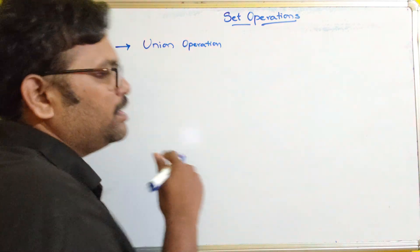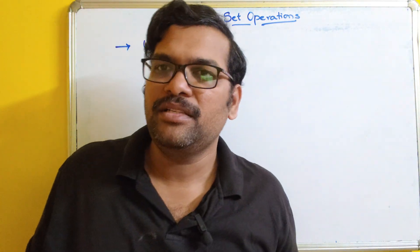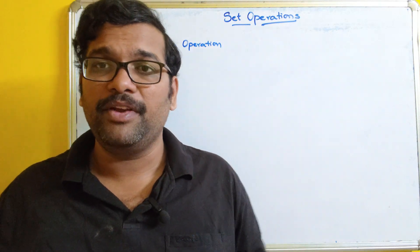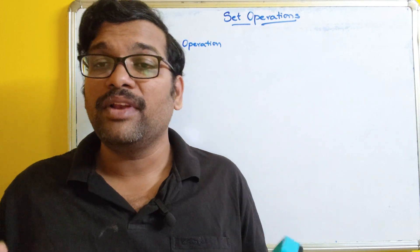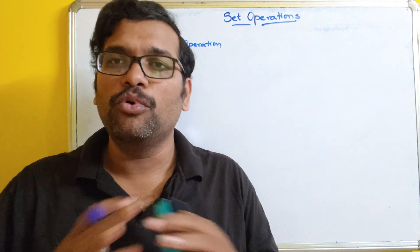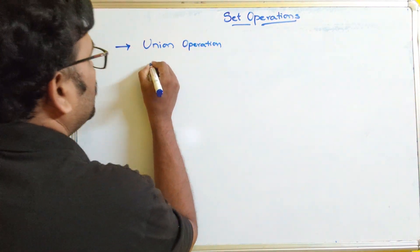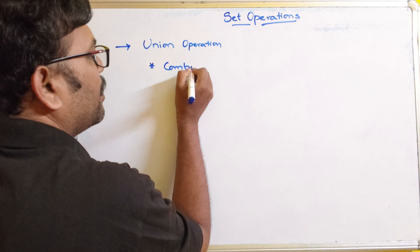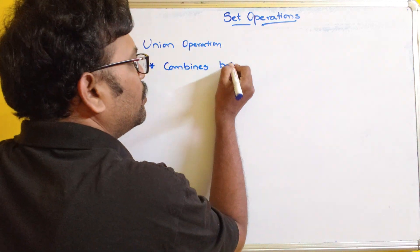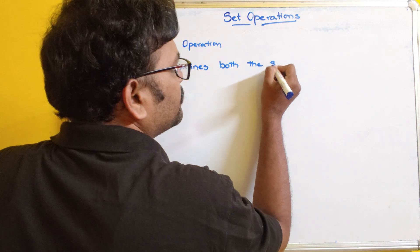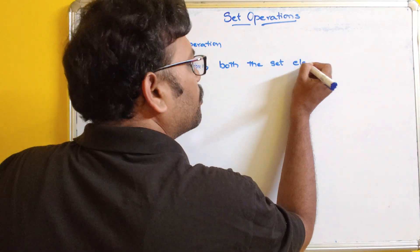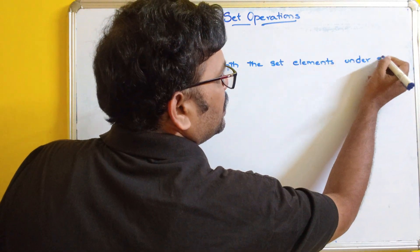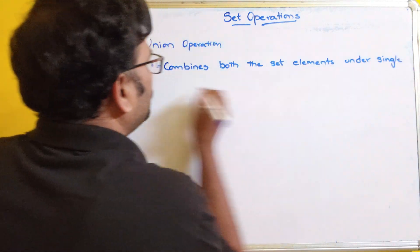Now coming to union — what does union mean? It means the combination of both sets. This union operation is performed between two different sets so that it combines all the elements of both sets under a single set.